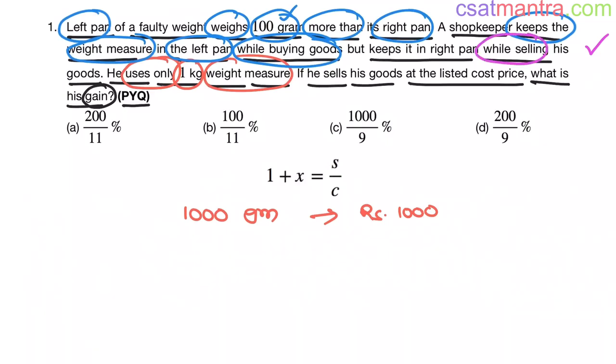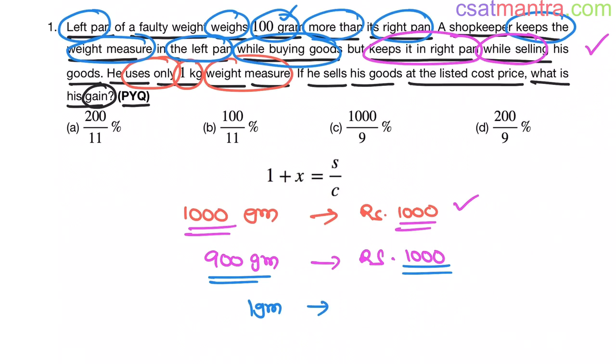Now, while selling, he keeps the weight measure in right pan. Say he is selling 1000 grams, left pan is already 100 grams. Now he would be selling 900 grams and he would be charging 1000 grams price, that is 1000 rupees. 1000 grams price is 1000 rupees. Do you get it? Now 900 grams price is 1000 rupees. Now 1 gram price would be 1000 by 900, this is 10 by 9.